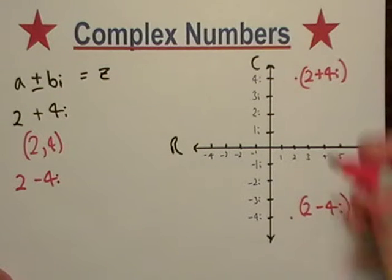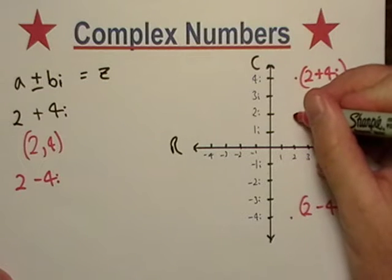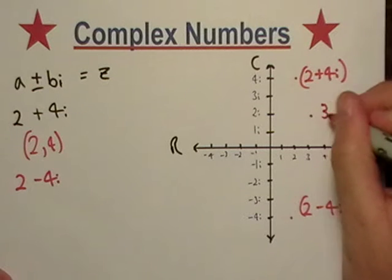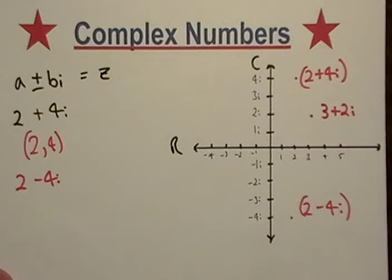So let's try another one. How about this point right here? That would be 3 plus 2i.